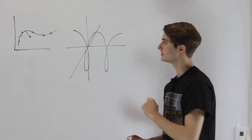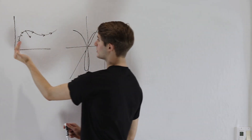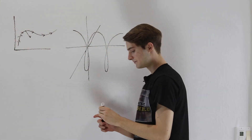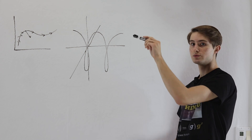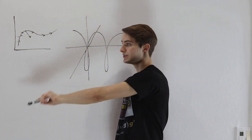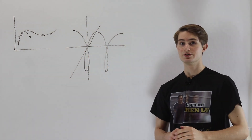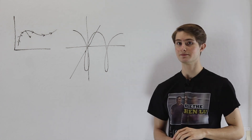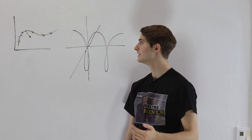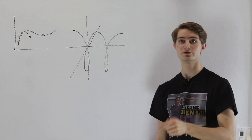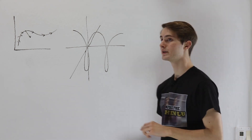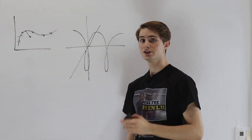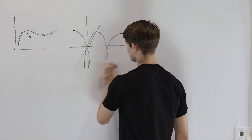Remember in two dimensions, the curve can only really turn either down or up. But in three dimensions, if something is moving through space like this, there's an infinite number of directions that that curve could turn in. So we want a formula that allows us to determine what direction the curve is turning. To figure that out, we're going to take a look at the unit tangent, normal, and binormal vectors.